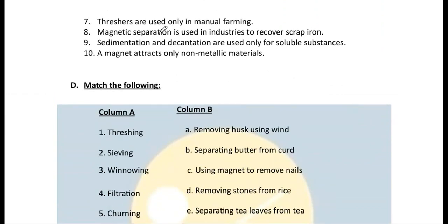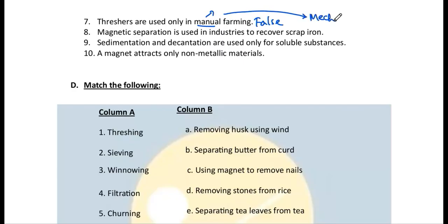Number 7: Threshers are used only in manual farming — false. They are used in mechanical farming.